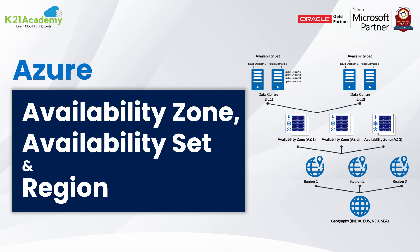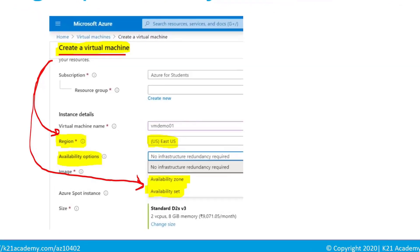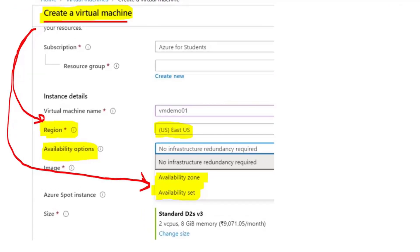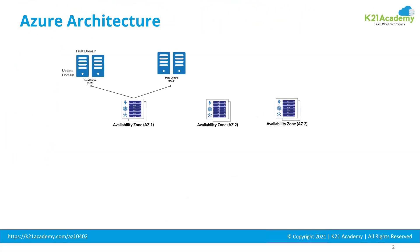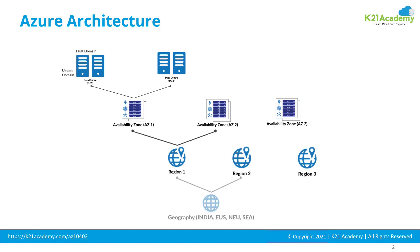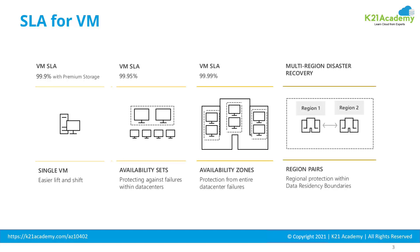When you provision a virtual machine on Microsoft Azure, you select a region in which you want to place this virtual machine and then you have an option to select either availability zone or availability set. So what is this availability set and availability zone? What is a region or a geography or fault domain that makes availability set? Also, what is a service level agreement that Azure provides for your virtual machines depending on these options you select? I'm going to cover all this in today's episode.